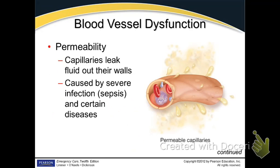In congestive heart failure, the capillaries leak fluid out because of the different pressures — the pressure in the capillary versus the pressure in the interstitial fluid. When fluid builds up due to congestive heart failure and there's more fluid in the capillaries than in the interstitial space, the fluid goes from the capillaries into the interstitial space, because everything always moves from higher pressure to lower pressure. That's the way everything moves — gas and fluid — through osmosis.